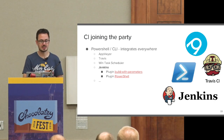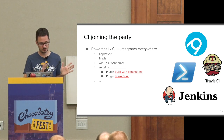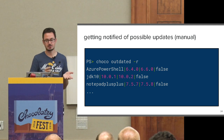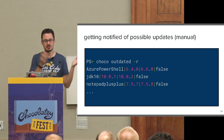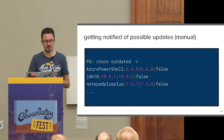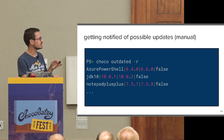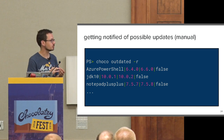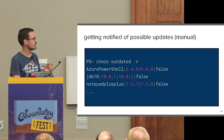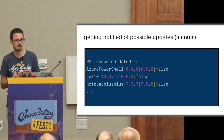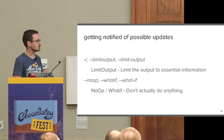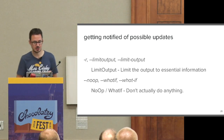If we want to get notified of possible updates manually, we would do something like this: choco outdated. I also always like the -r switch because it creates those little pipes in between and strips out all the output we do not need, creating a really nicely machine-readable output. By using choco outdated you see which package is installed, in what version, which version is the latest available, and if it's pinned or not — so you can pin packages so they would not get upgraded if you run choco upgrade all. There are also other nice switches like the noop action if you prefer choco upgrade over choco outdated.